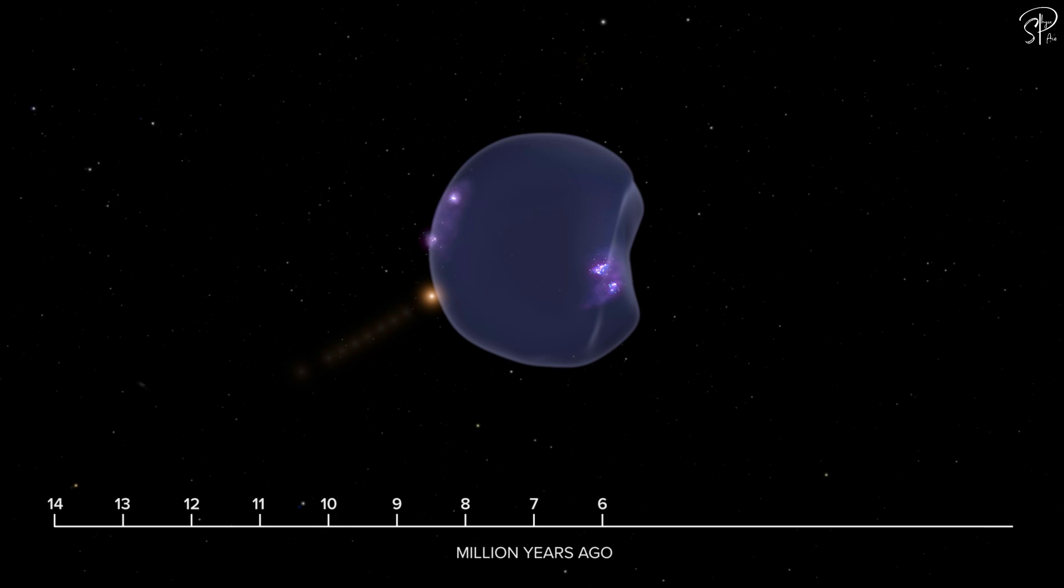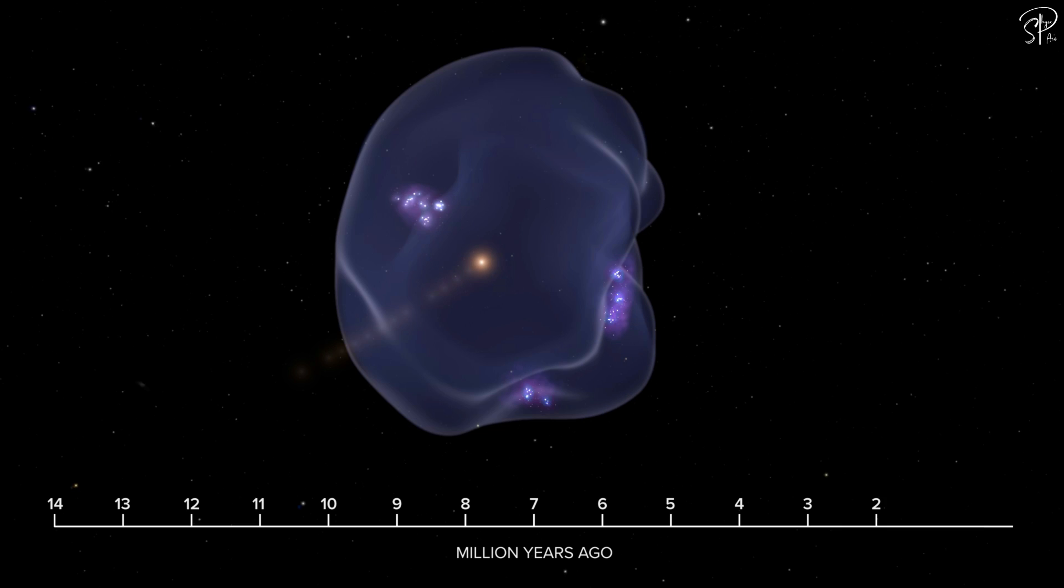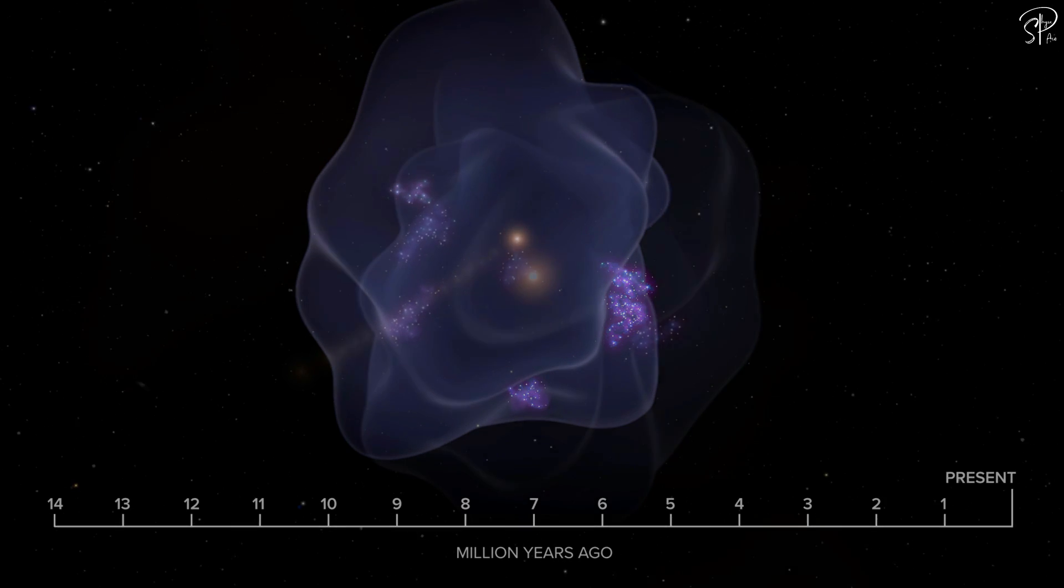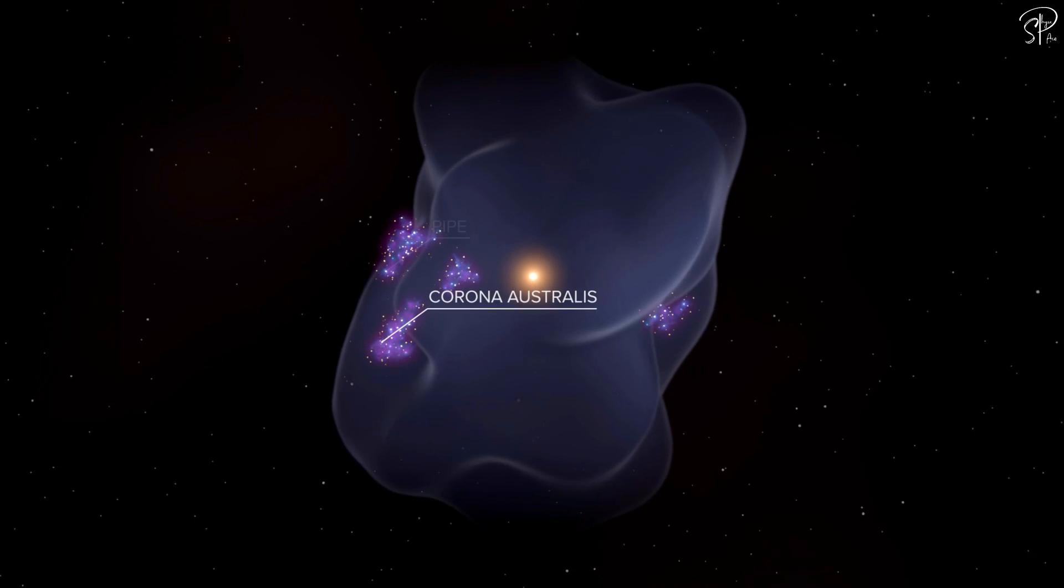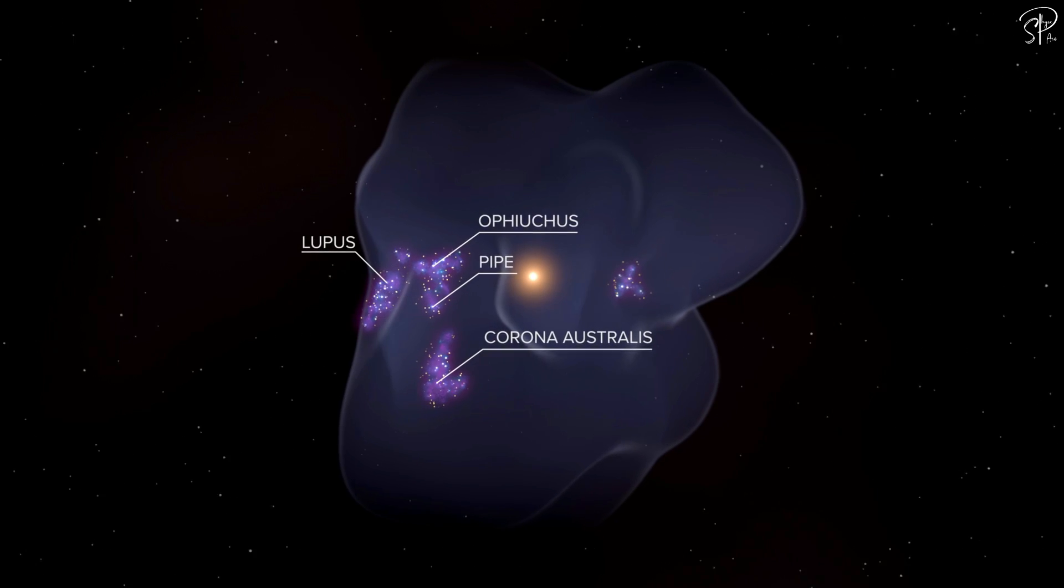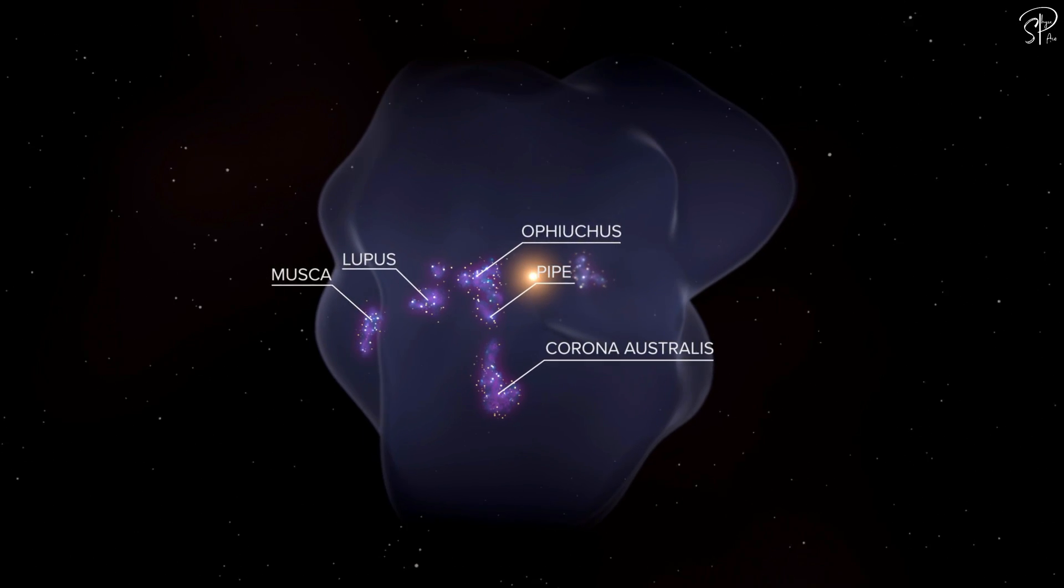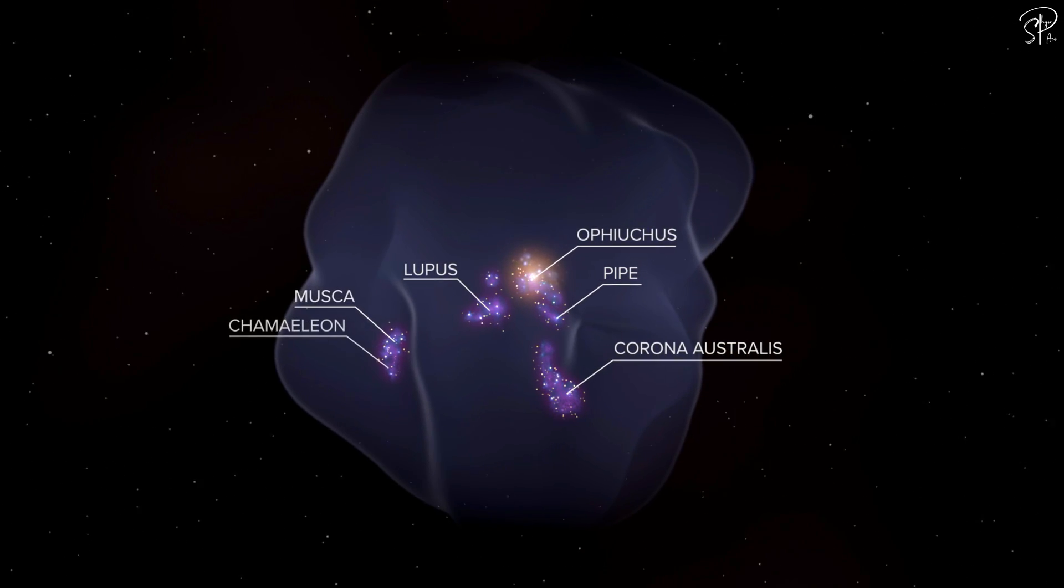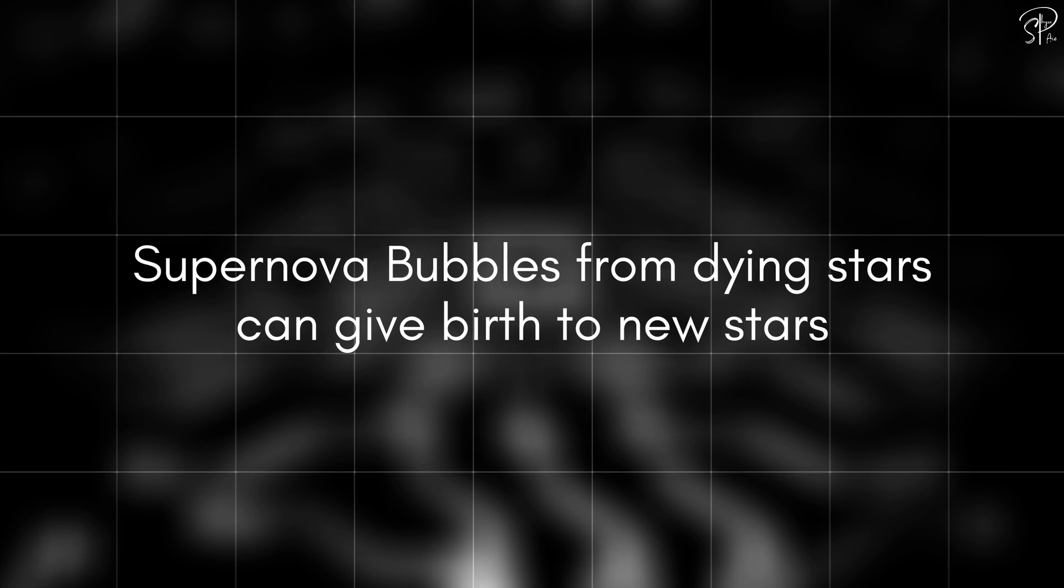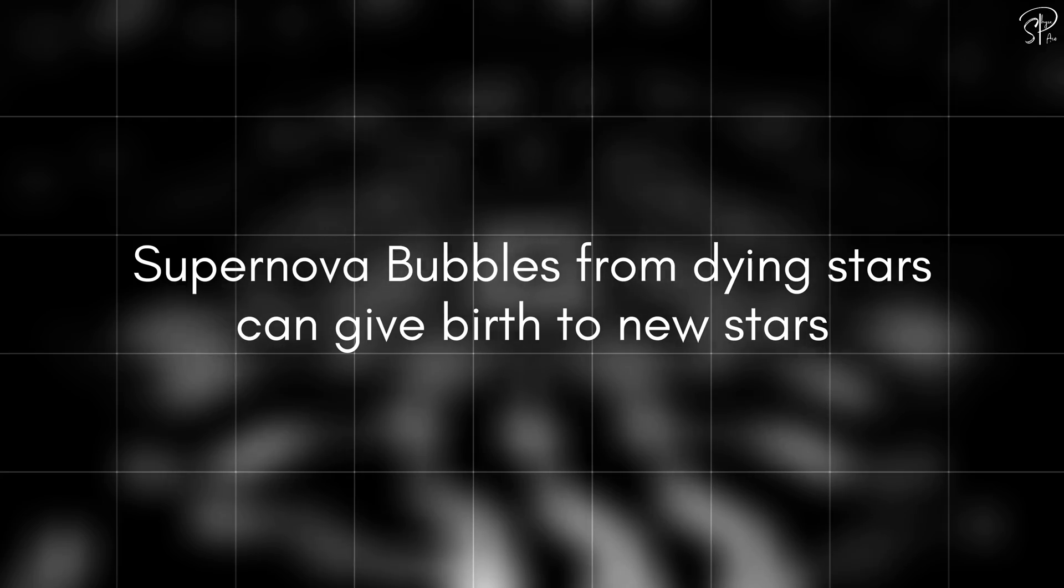But about 5 million years ago, the sun's path through the galaxy took it into the bubble. Looking out from inside that thousand light years wide bubble, today we see star formation all around us. Stars are forming on the bubble's surface, but weirdly, not inside of it. This discovery proves a 50 years old theory that supernova bubbles from dying stars can give birth to new stars.